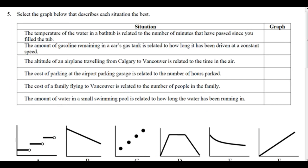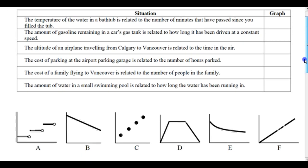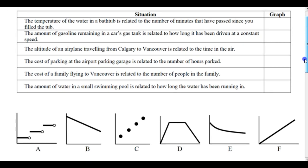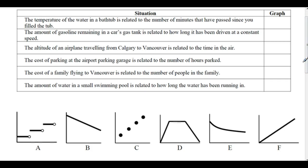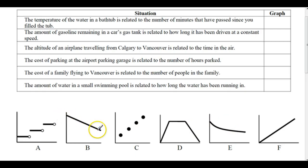Select the graph below that best describes each situation. The temperature of water in a bathtub is related to minutes passed since filling — the temperature goes down and then levels off as it reaches room temperature, so that's graph E. The amount of gasoline remaining in a car's tank is related to how long it's been driven at a constant speed — B is the better one for that. So gasoline remaining is B, and bathtub temperature is E.